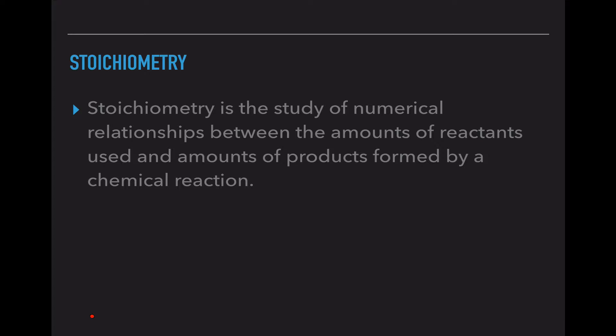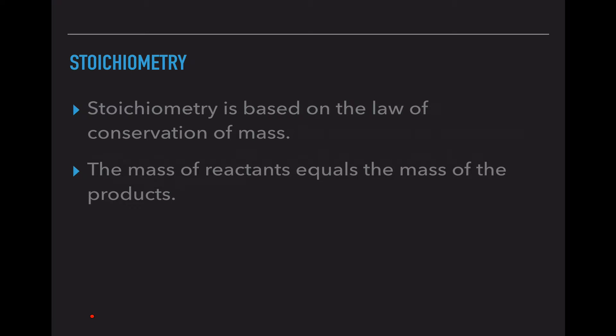So essentially if I need four eggs to make a whole batch of cupcakes but I only have two eggs instead of 24 cupcakes I'm only going to be making 12. So that's kind of a normal person definition of what stoichiometry is. It is a recipe to determine what the outcome is going to be based on the stuff that we start with.